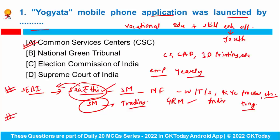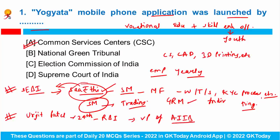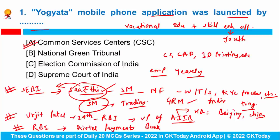Urjit Patel, who served as the 24th governor of RBI, has recently been appointed as the vice president of the Asian Infrastructure Investment Bank, headquartered in Beijing, China. Apart from this, RBI has recently included Airtel Payments Bank in the second schedule of RBI Act 1934.